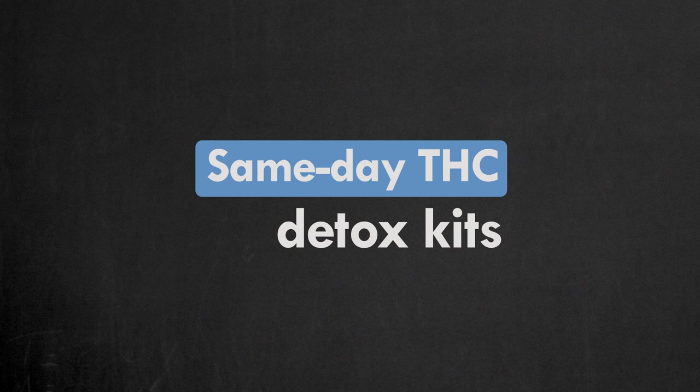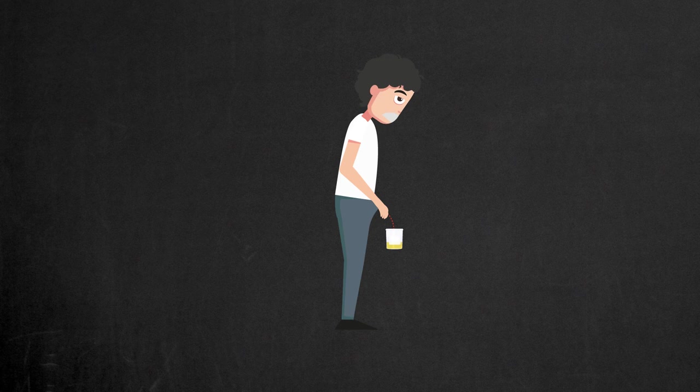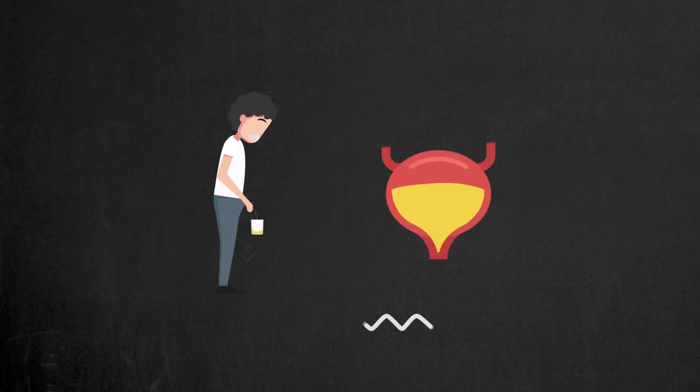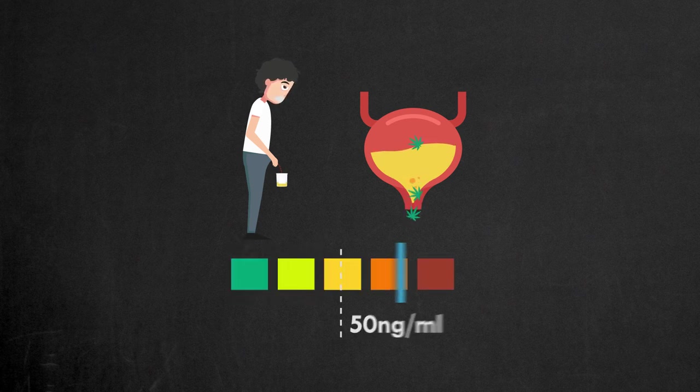Let's talk about how same-day THC detox kits work. The good kit must do the following: make you drink and frequently urinate, so THC metabolites are flushed out of the bladder and their concentration in the urine goes below the detectable level.